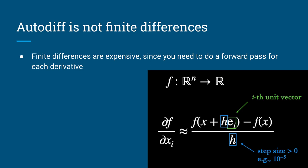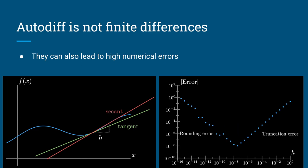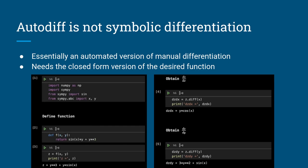Before we dive into autodiff, I'd like to first say what autodiff isn't — there are some other ways to calculate derivatives with a computer. The first one is finite differences, which is based on the limit definition of a derivative. Basically, to calculate the derivative of a function with respect to one of its inputs, you calculate a quotient where you evaluate the function twice at nearby points using a step size. The value of this step size is very important: high values can get rounding error, while very low values lead to truncation error as you're trying to calculate something as H tends to zero while dividing by it. Also, you have to perform this quotient for each one of the function's inputs.